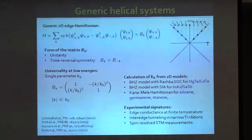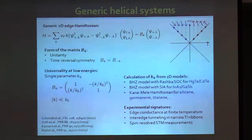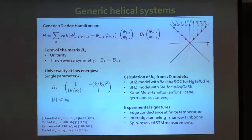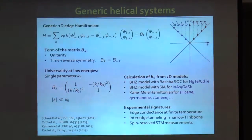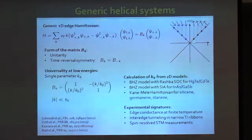Regarding experimental signatures, the generic helical liquid modifies the edge conductance at finite temperatures: we get a correction scaling as T to the fourth power at low temperature, which is the largest correction allowed by time reversal symmetry for dimensional reasons. One can also study intra-edge tunneling in a narrow topological insulator nanoribbon, where tunneling between upper and lower edge modes strongly depends on the spin texture. In principle one can measure this using spin-resolved STM measurements to map the spin structure of the edge states.